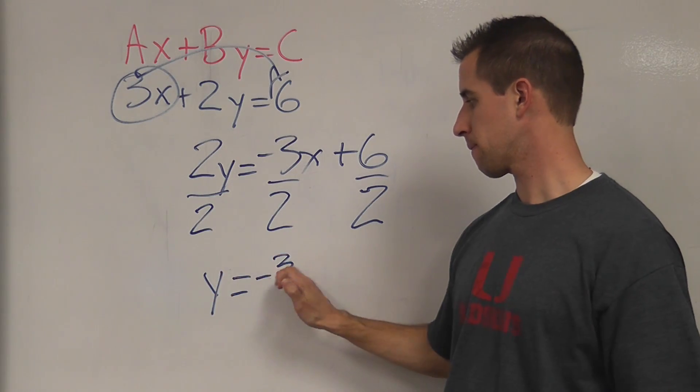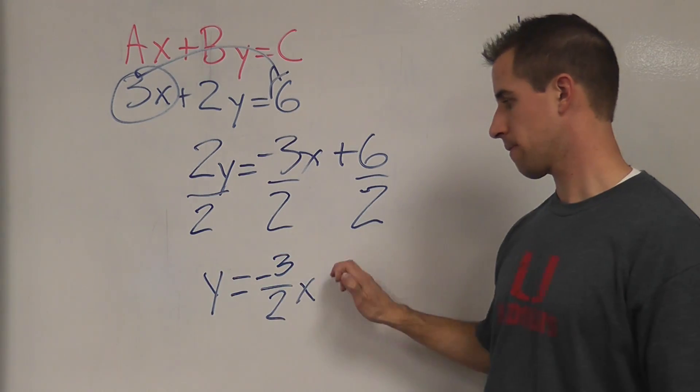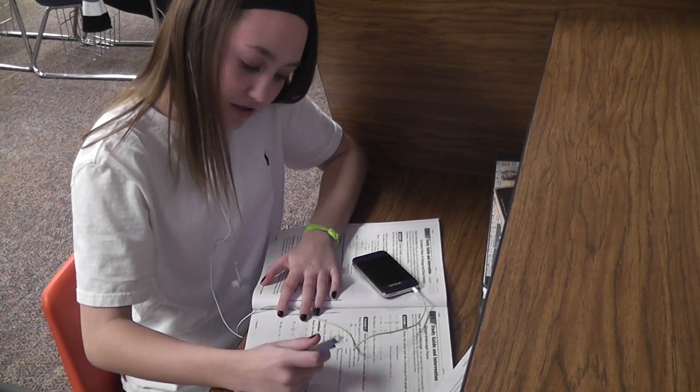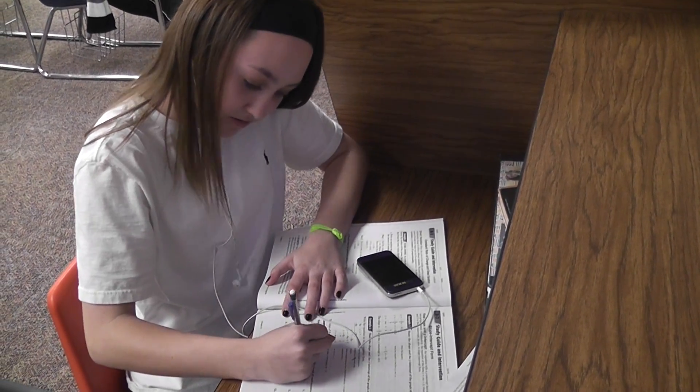Now it's in the form Y equals MX plus B. That's the one you need for graphing these equations, you see. Remember this one and you lived through the algebra storm. Now you're graphing these equations, it's slope-intercept form.